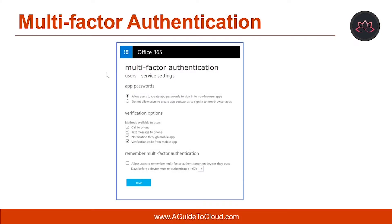Let's look at multi-factor authentication. About 81% of all successful attacks result from weak or compromised credentials. Multi-factor authentication helps safeguard access to data and applications. MFA requires two or more of the following authentication methods: something you know, which is typically a password; something you have, which is a trusted device not easily duplicated such as a smart device or a badge; and something you are, which is usually a fingerprint, iris or retinal scan, or facial recognition. Compromising multiple authentication factors presents a significant challenge for attackers, because even if they manage to compromise a user's password, they can't use it without also possessing one of the additional authentication methods.